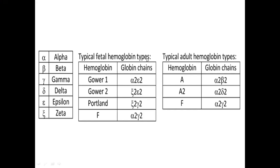During fetal life the hemoglobin types are: Hemoglobin Gower 1, which has two chains of alpha and two chains of epsilon; Gower 2, which has two chains of zeta and two chains of epsilon; and Portland hemoglobin, in which the chains are two zeta and two gamma.